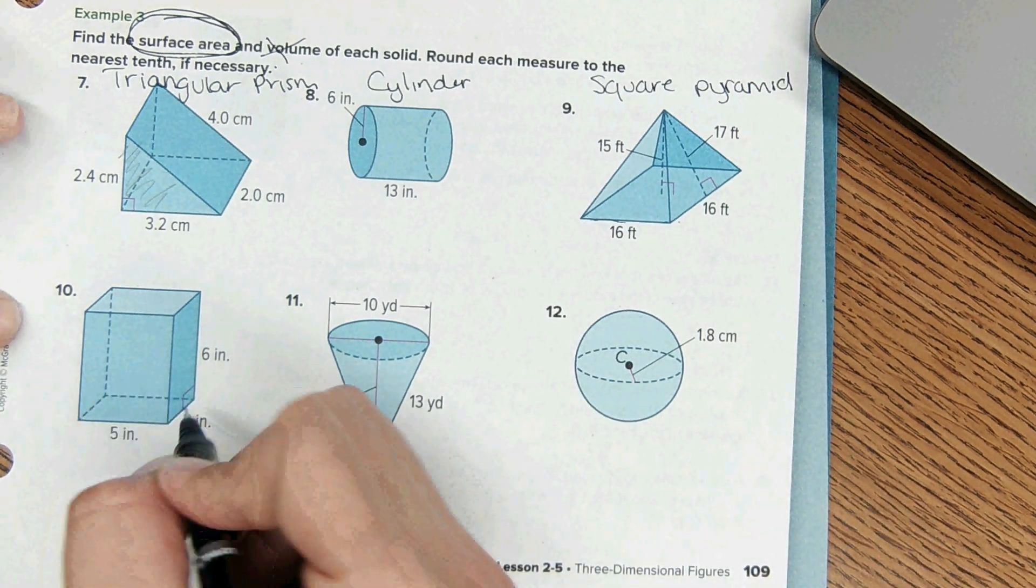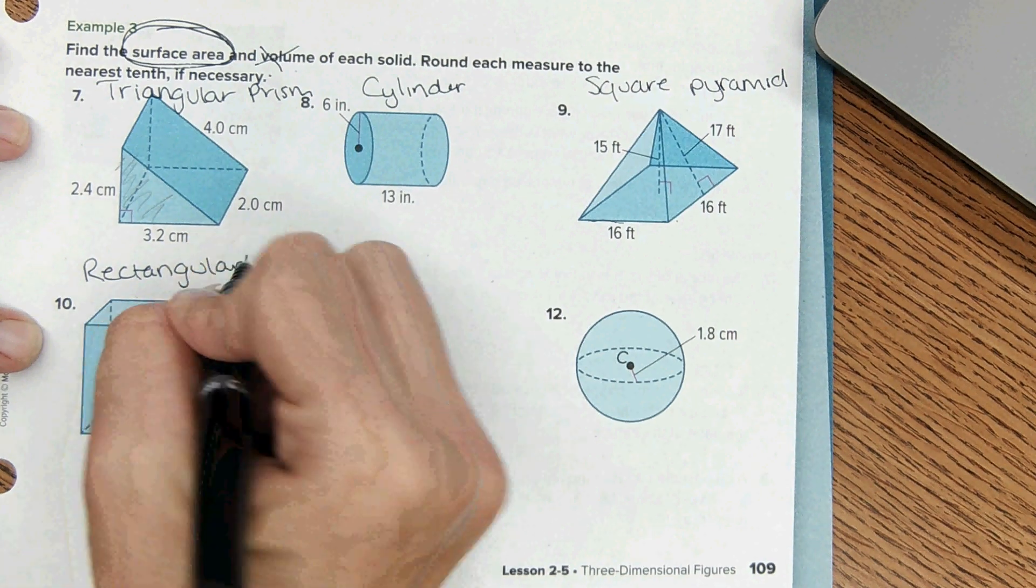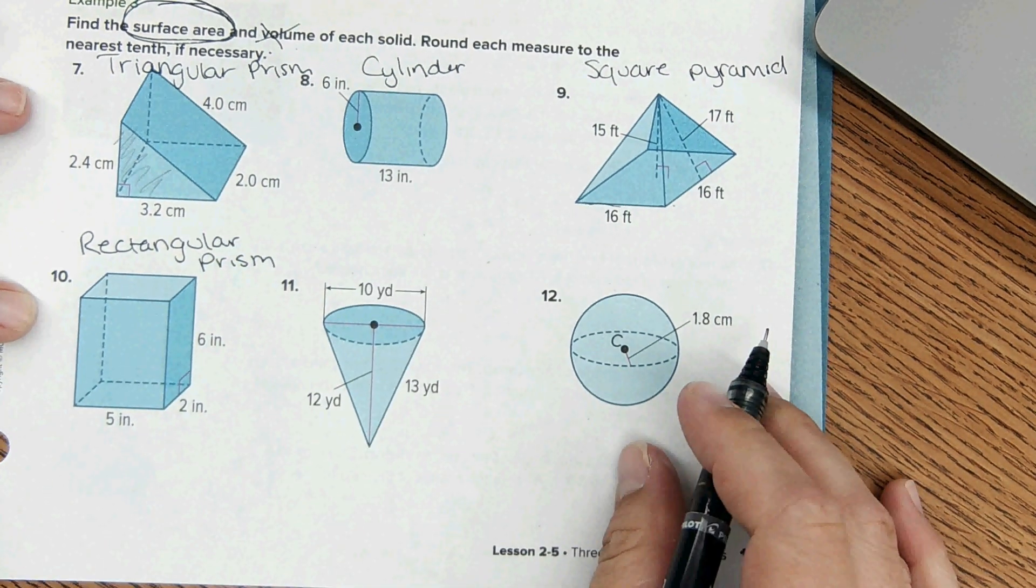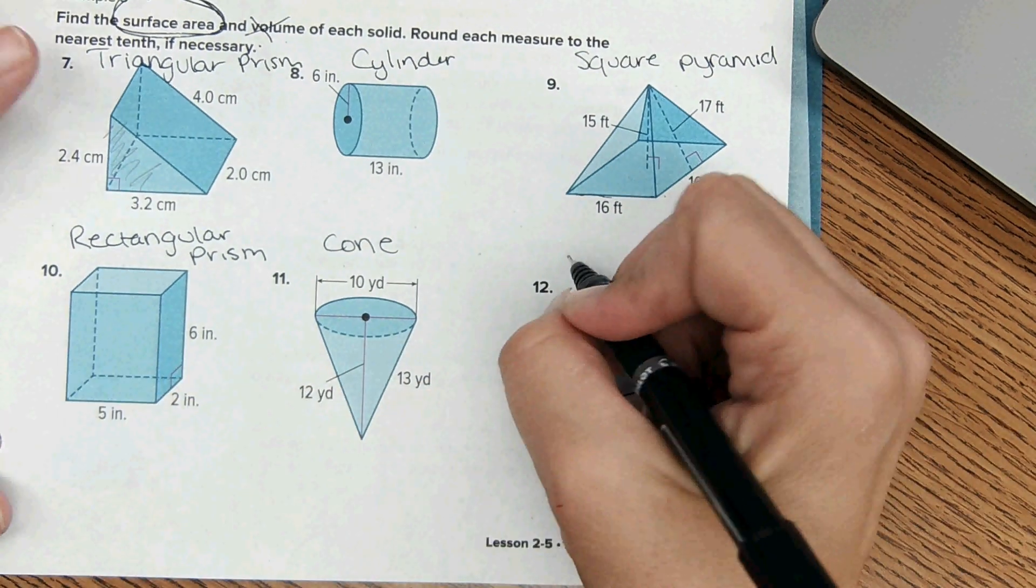And then this rectangular prism again, this one would be a cone, and then a sphere.